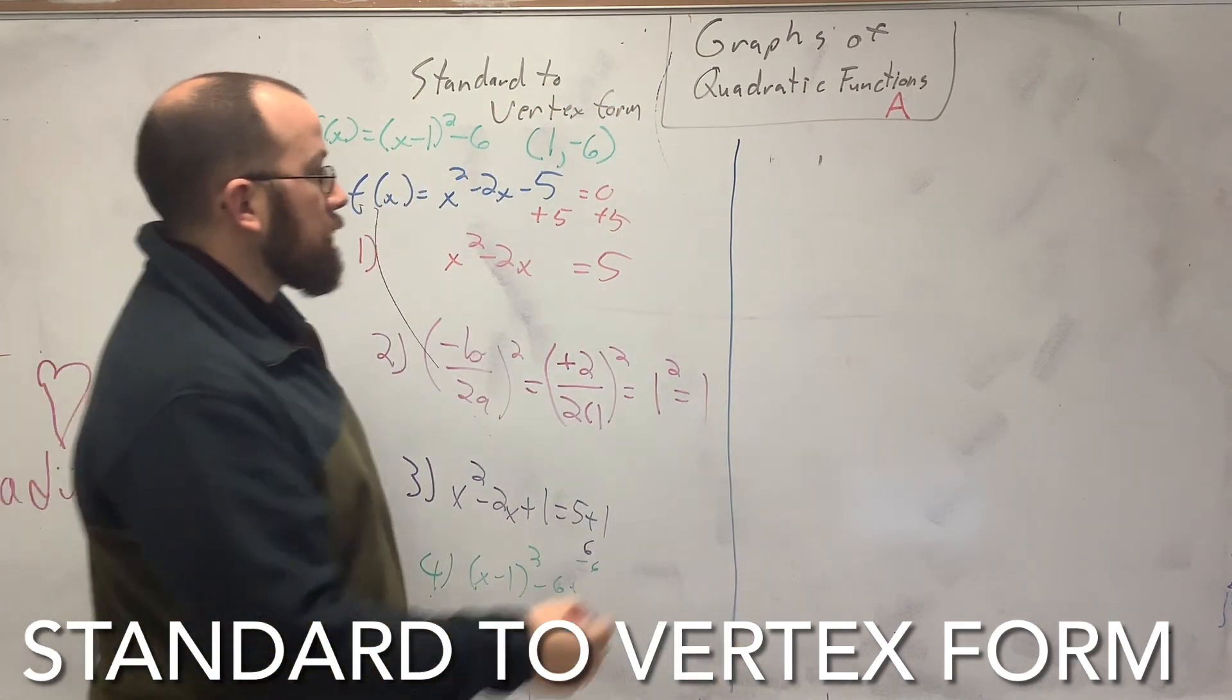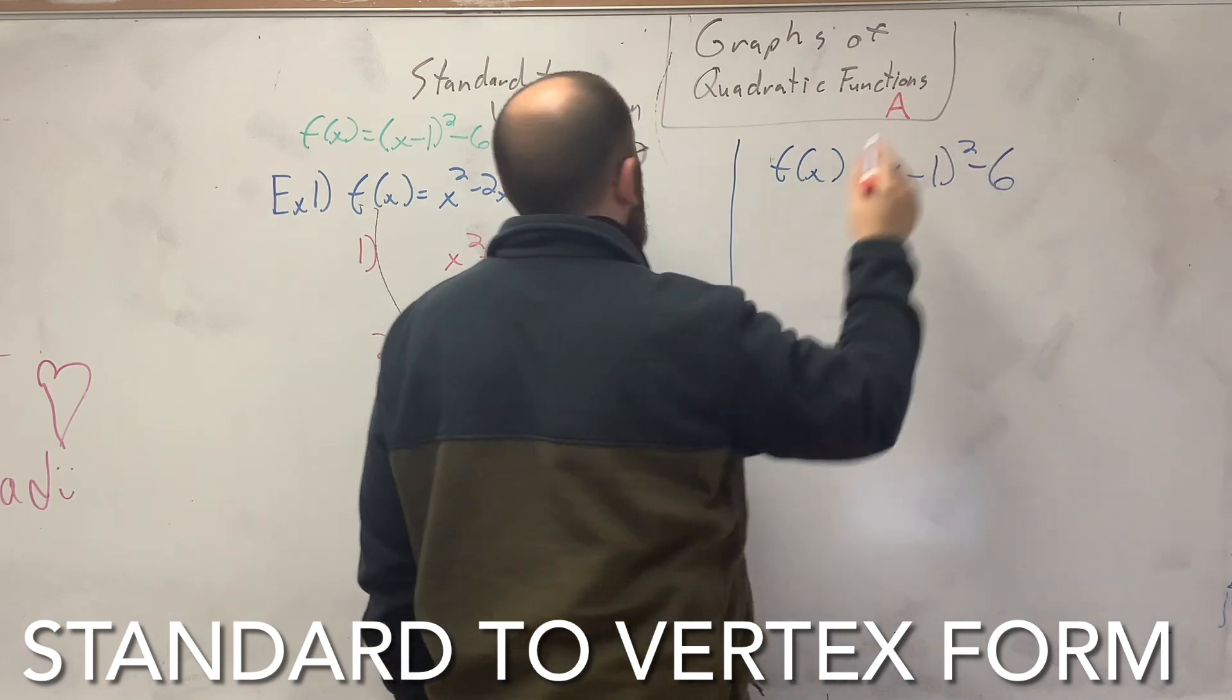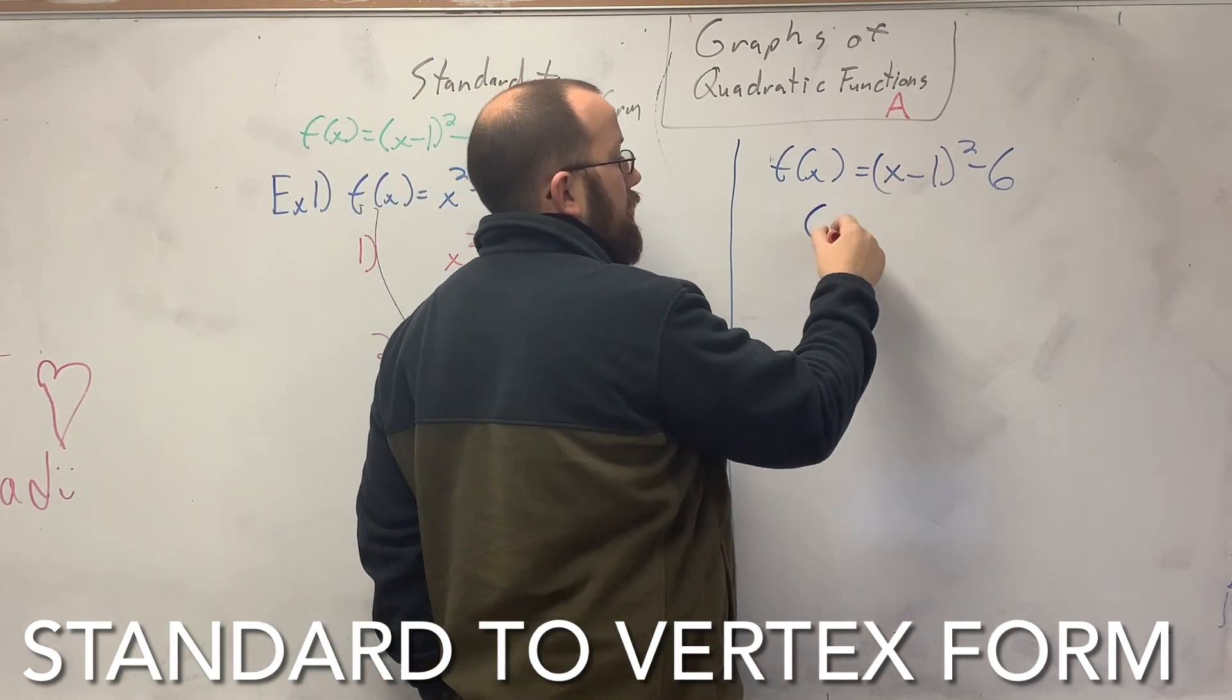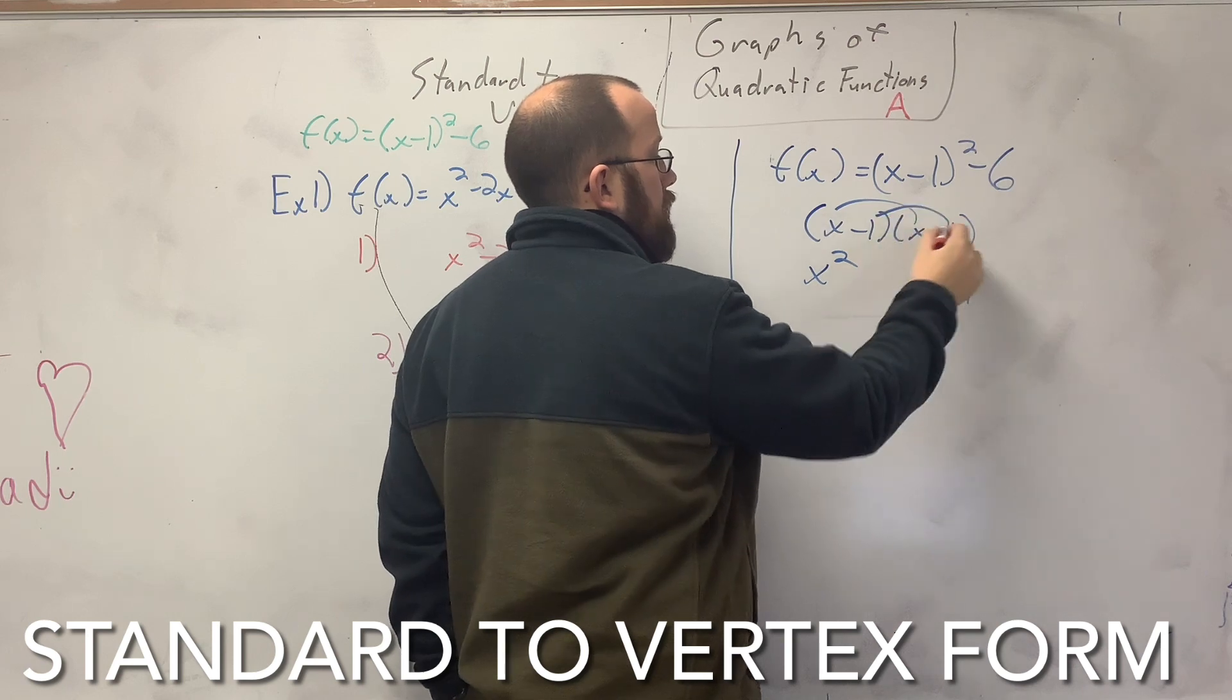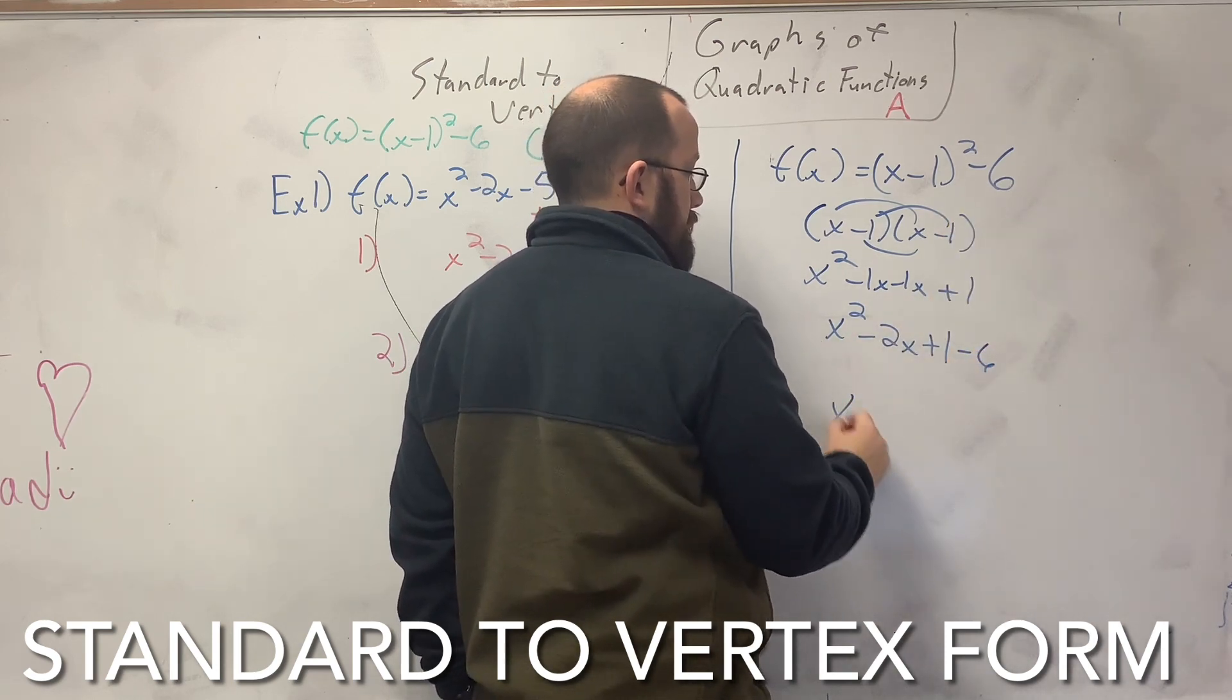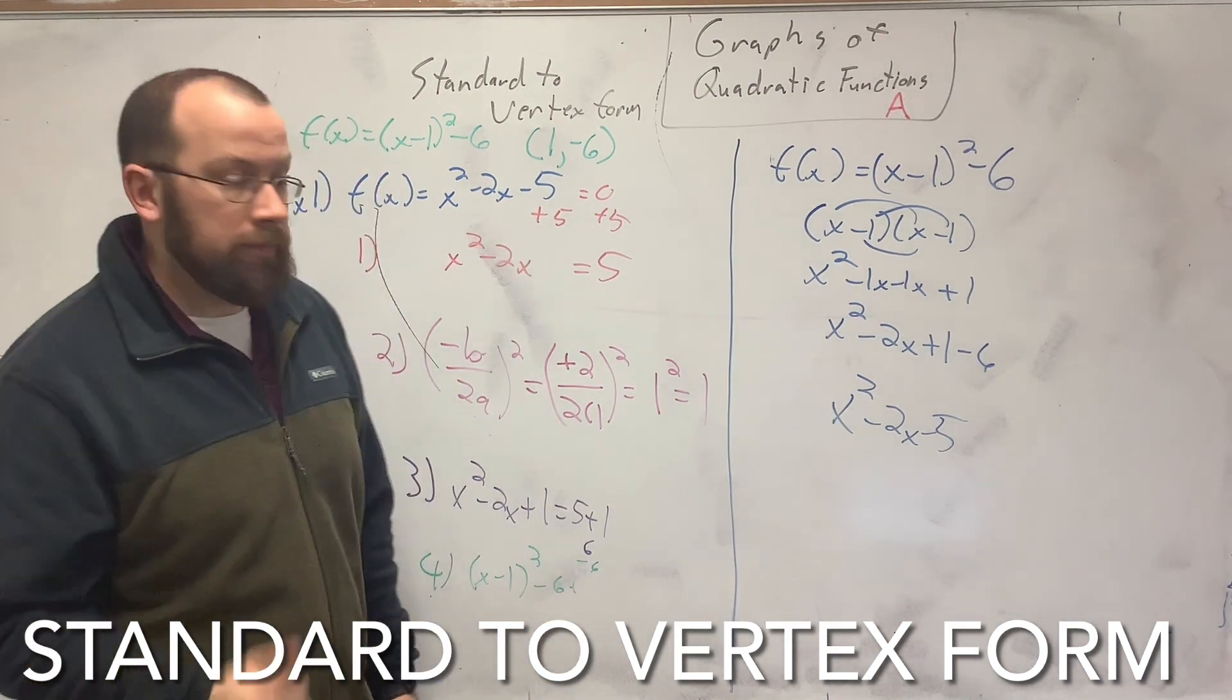You just basically go backwards. So if I have f(x) equals x minus 1 squared minus 6, how do I switch that to standard form? So I expand this out. x minus 1 times x minus 1. x squared minus 2x plus 1, and subtract 6. x squared minus 2x minus 5. And that was our original function there. So there you go.